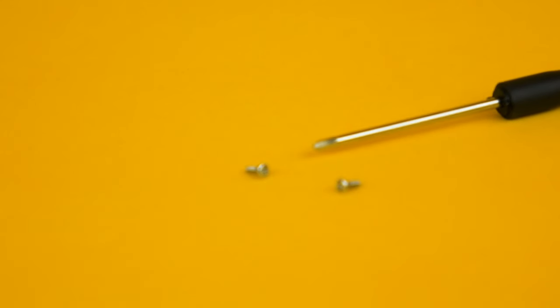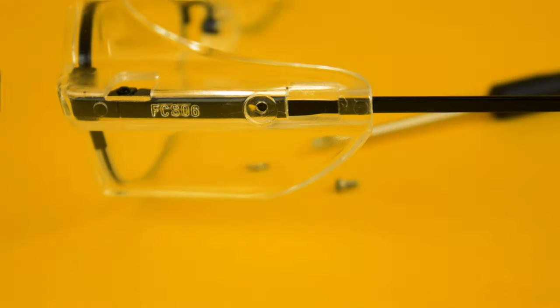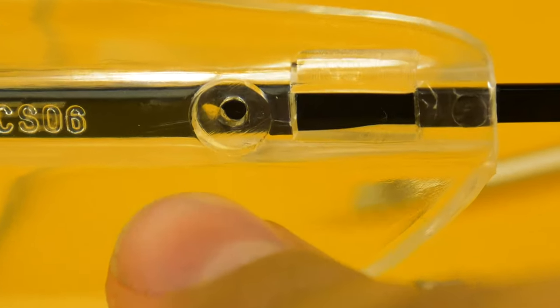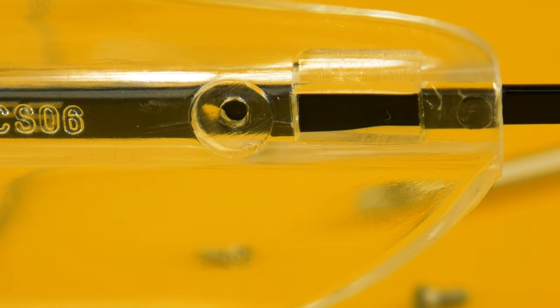But these side shields aren't secure just like that; they also need a screw. So to put in the screw, make sure that the holes are aligned. As you can see right now, they're not.